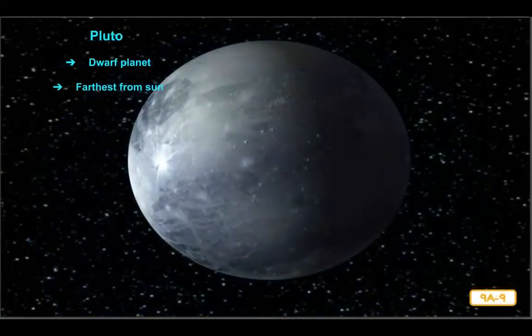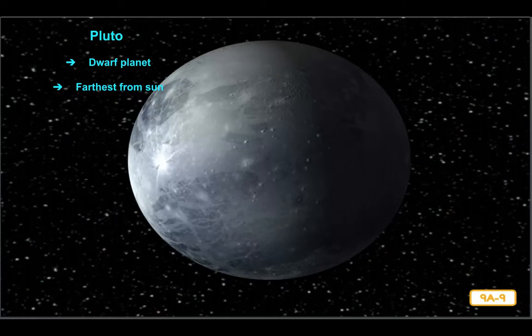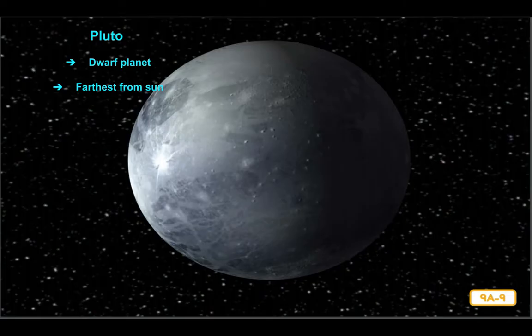Not so long ago, students were taught that there were nine planets in the solar system, including Pluto. Ever since Pluto was discovered in 1930, it had been considered a planet. However, in 2006, astronomers decided to categorize Pluto as a dwarf planet — one of several such bodies in our solar system. They decided to sort planets into two categories: dwarf, meaning little, and regular. Categorizing Pluto as a dwarf planet means they put Pluto in the dwarf planet group.